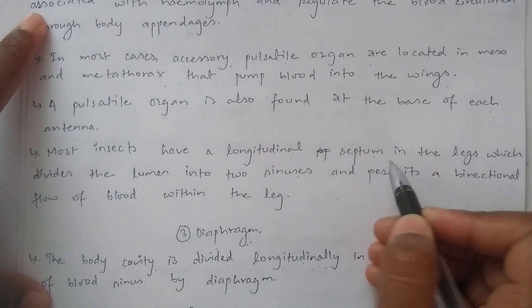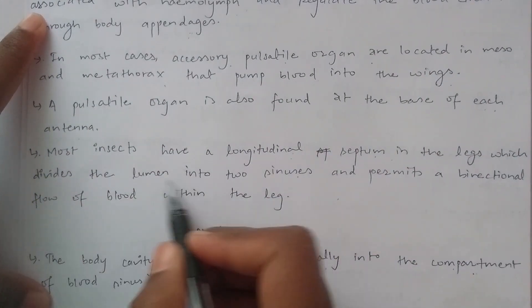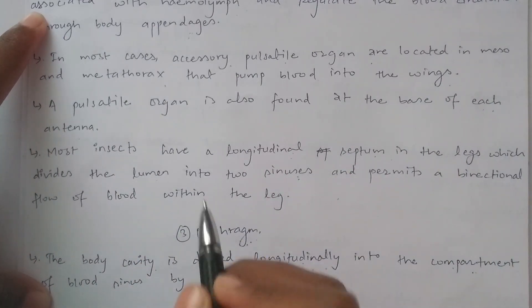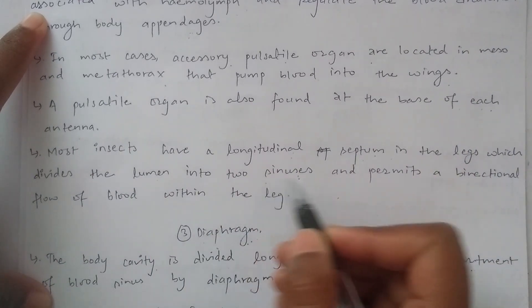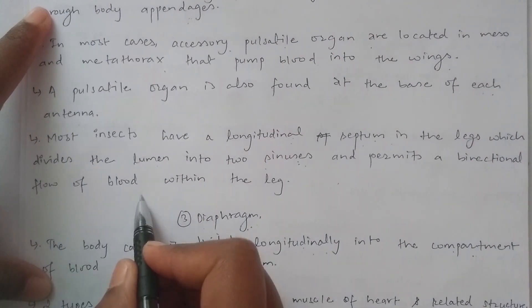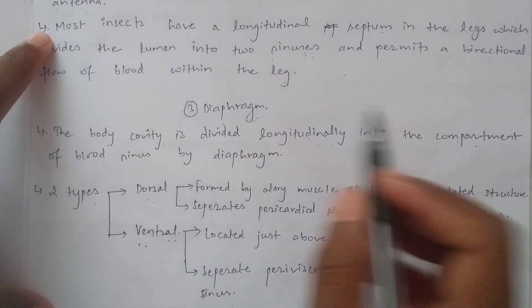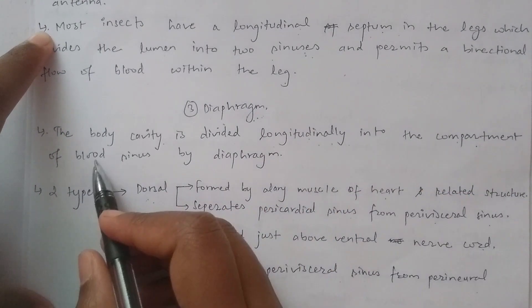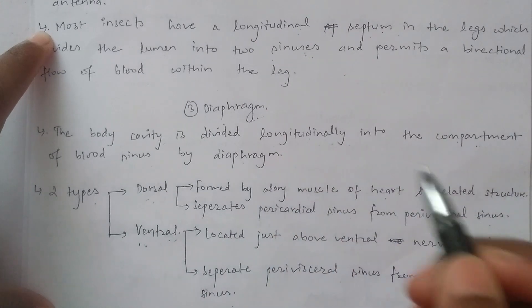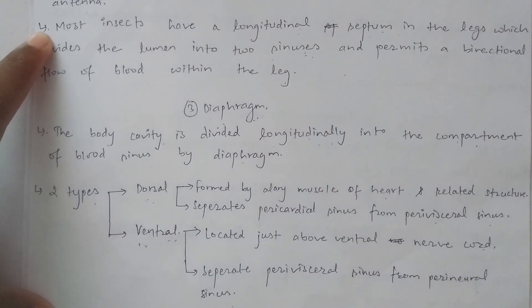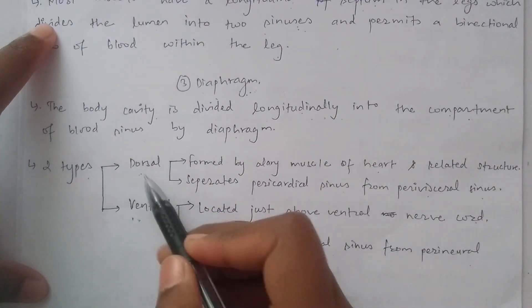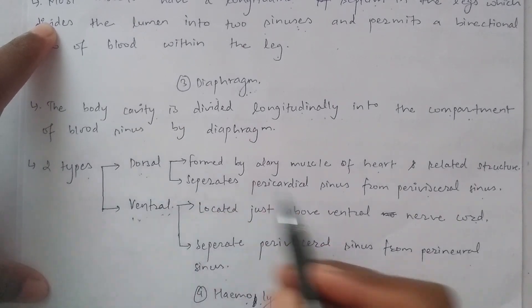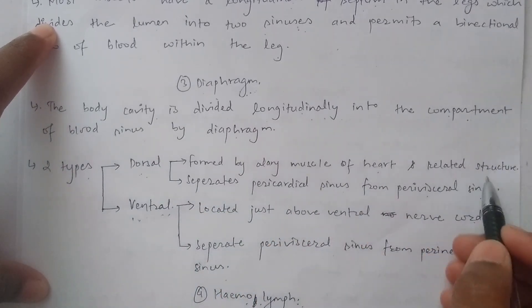Most insects have a longitudinal septum in the legs, which divides the lumen into two sinuses, allowing bi-directional flow of blood within the legs. The body cavity is divided longitudinally into compartments — blood sinuses — by the diaphragm. The blood flow pattern is formed by the two diaphragms and the aluring motion of the heart and related structures.